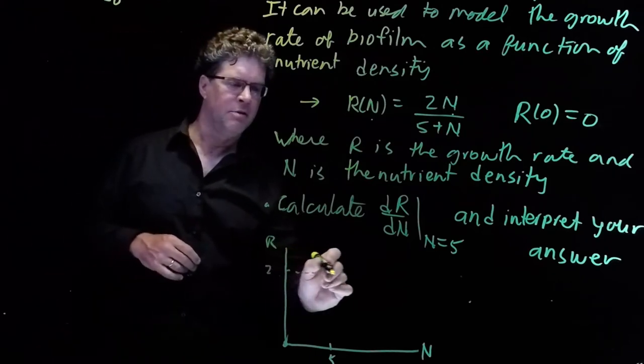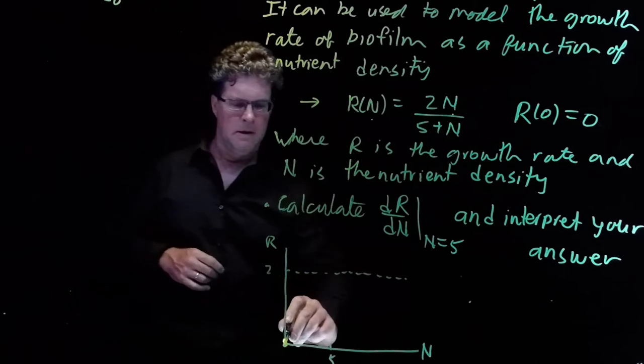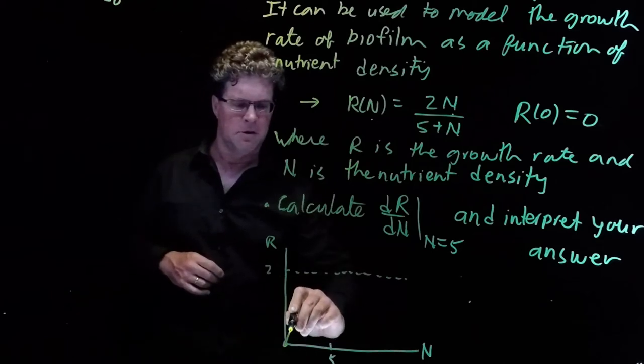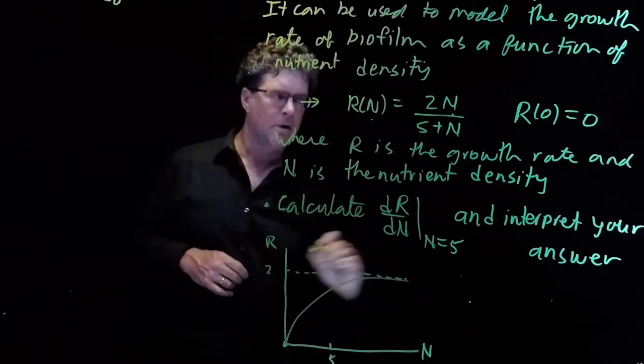So we can get a sketch of the function just to get a sense of what it looks like. It goes through 0, 0, and it grows and levels off.